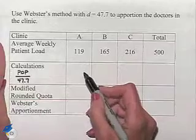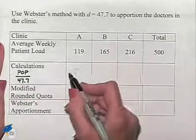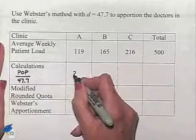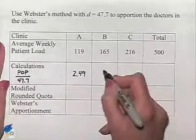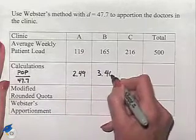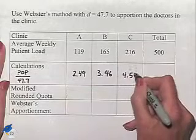Let's go ahead and do the calculations. We're going to divide 119 by 47.7 to give us 2.49. Dividing B gives us 3.46. For clinic C, division gives us 4.53.